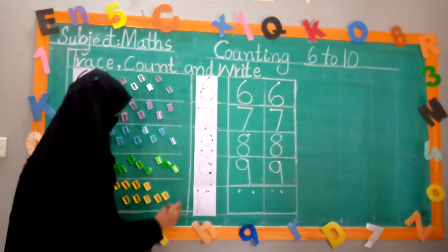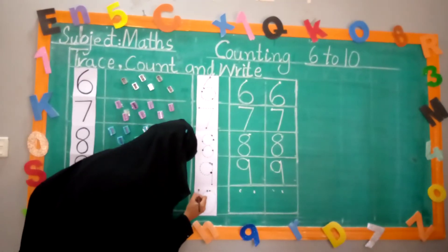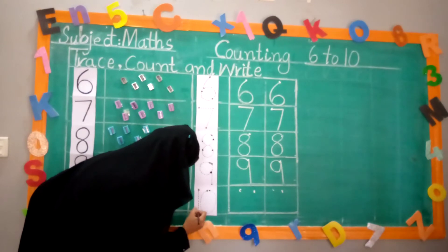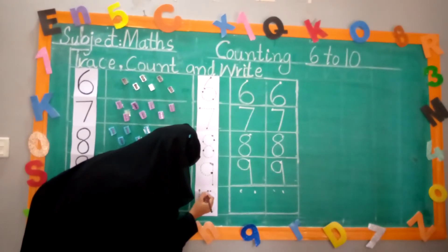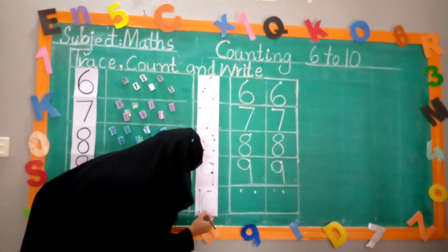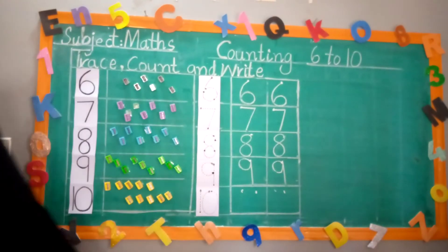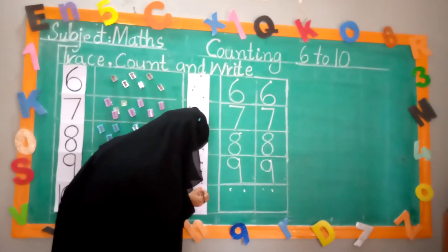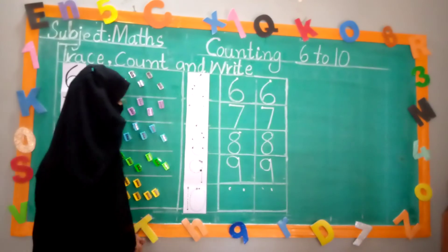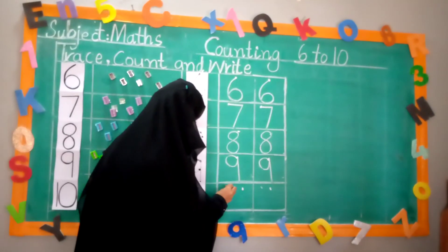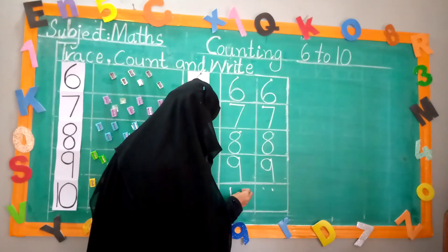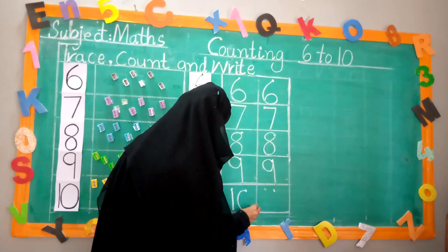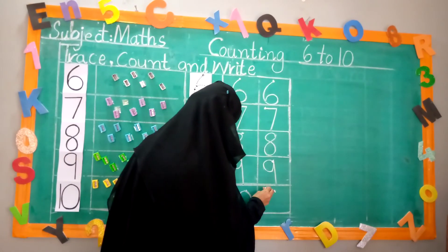Now, trace 10. 10 is bat and ball. Now, we write 10. Again, we write 10.